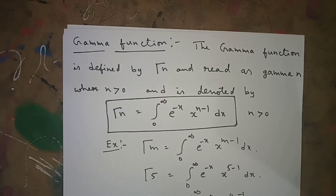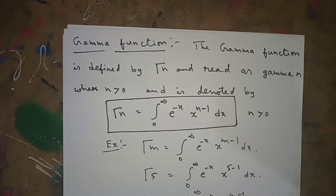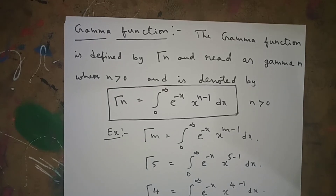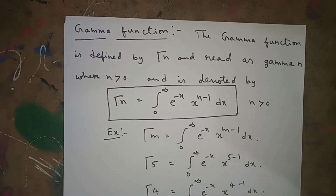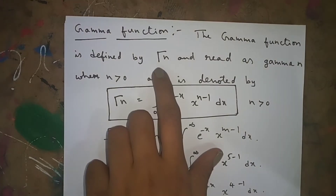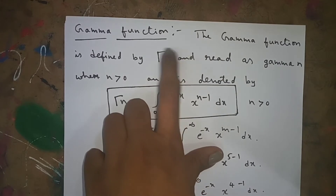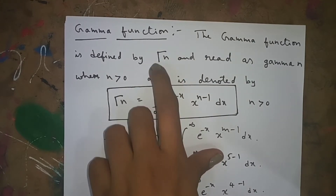Today I am going to explain the gamma function. The gamma function comes under special functions. What is the definition, how to denote it, and what are the properties — everything we will see. The gamma function is a special kind of function. The gamma function is defined by gamma of n, where the symbol is just a reverse 7.